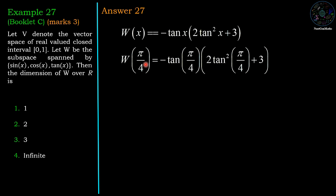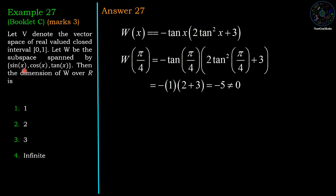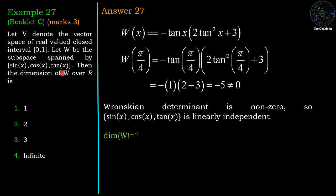Now if we take x = π/4, the value of the Wronskian is −2 tan(π/4) · sec²(π/4). Since tan(π/4) = 1, this gives a non-zero value. Therefore, at x = π/4 the Wronskian is non-zero, so the set {sin x, cos x, tan x} is independent, and hence the dimension of W is 3.